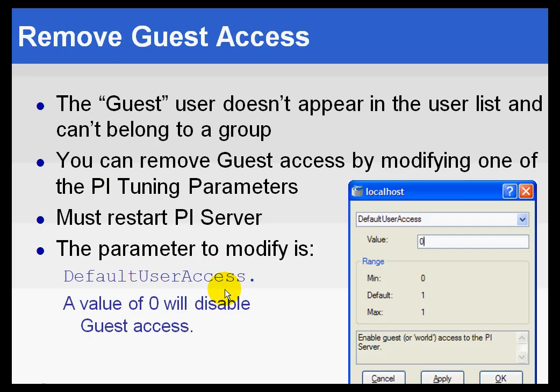Now, there's one other thing we haven't discussed yet, and that is guest access to the PI Server. Guest access to PI Server is simply the fact that if a username and password prompt appears and you cancel out of it, we give you the same credentials as something called the guest user. The guest user doesn't show up in any lists — it simply has the same privileges as what we call the world. In security, there's a concept of the owner of an object, the group associated with an object, and anybody who's not the owner or in that group is the world. World typically has read access.